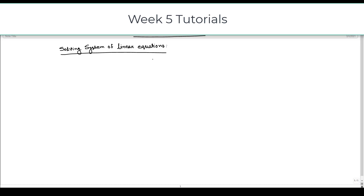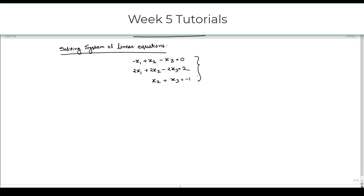Let us consider this system of linear equations first, which is given as: minus x1 plus x2 minus x3 equals 0; the second equation is 2x1 plus 2x2 minus 2x3 equals 2; and the third equation is x2 plus x3 equals minus 1. These three equations make up this system of linear equations.